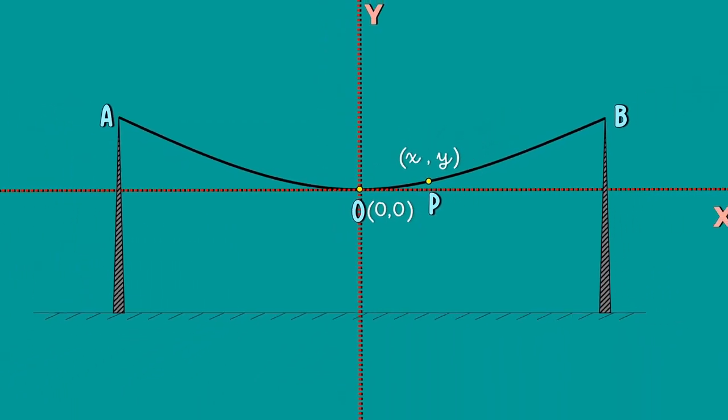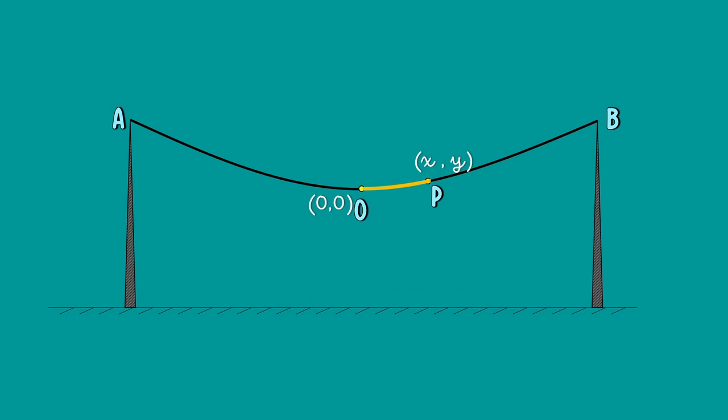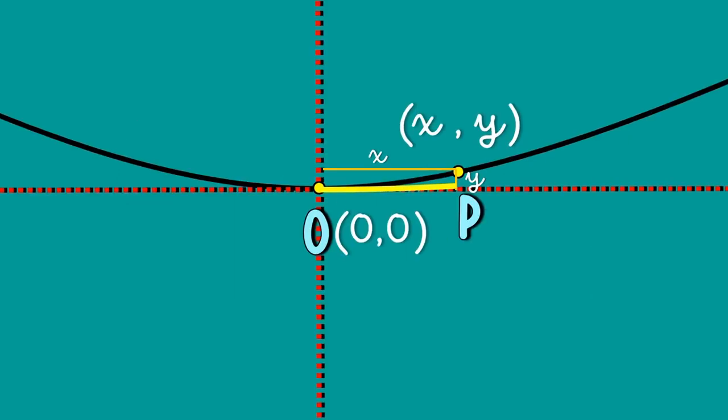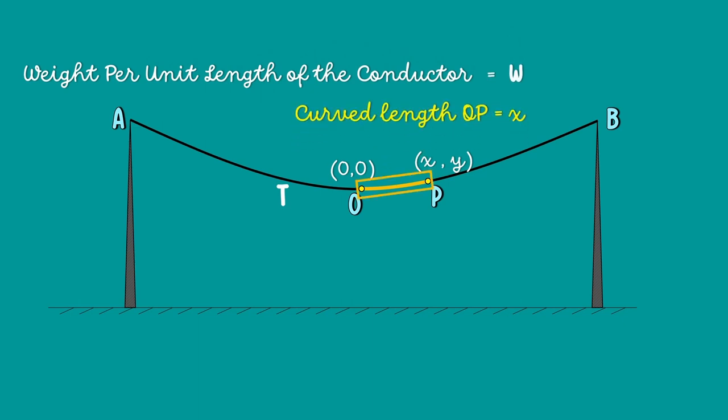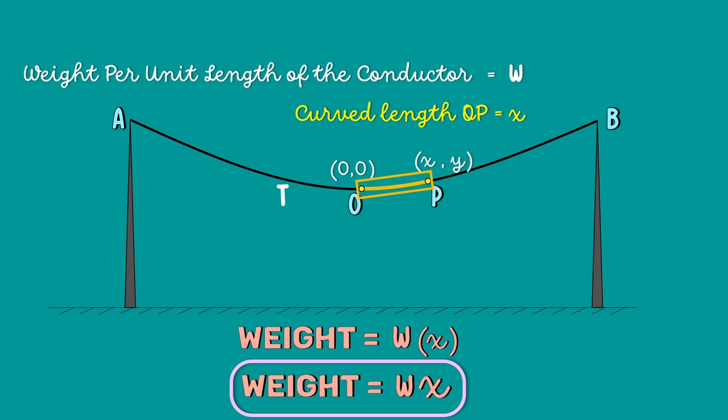The two forces acting on the portion OP of the conductor are the weight of the conductor acting at the center and the tension T acting at O. Here, we have selected a small length OP. Therefore, the curvature will be very small. So we can assume that the curve length will be almost equal to the length OP which is X. This means the distance between the center point and the point O is X by 2. The weight per unit length of the conductor is W. Since the length of this small portion OP is X, the weight of this part of the conductor will be W multiplied by X.